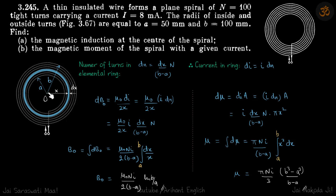Let's take an elemental ring at a distance x of width dx. So the small radius is a, bigger radius is b, so in b minus a thickness we have number of turns capital N.